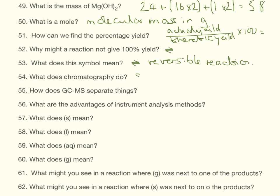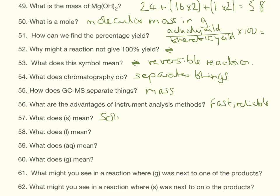What does chromatography do? It separates things out so we can see what's in there. How does GC-MS separate things? It separates them by mass. What are the advantages of instrumental methods? It is fast and reliable.